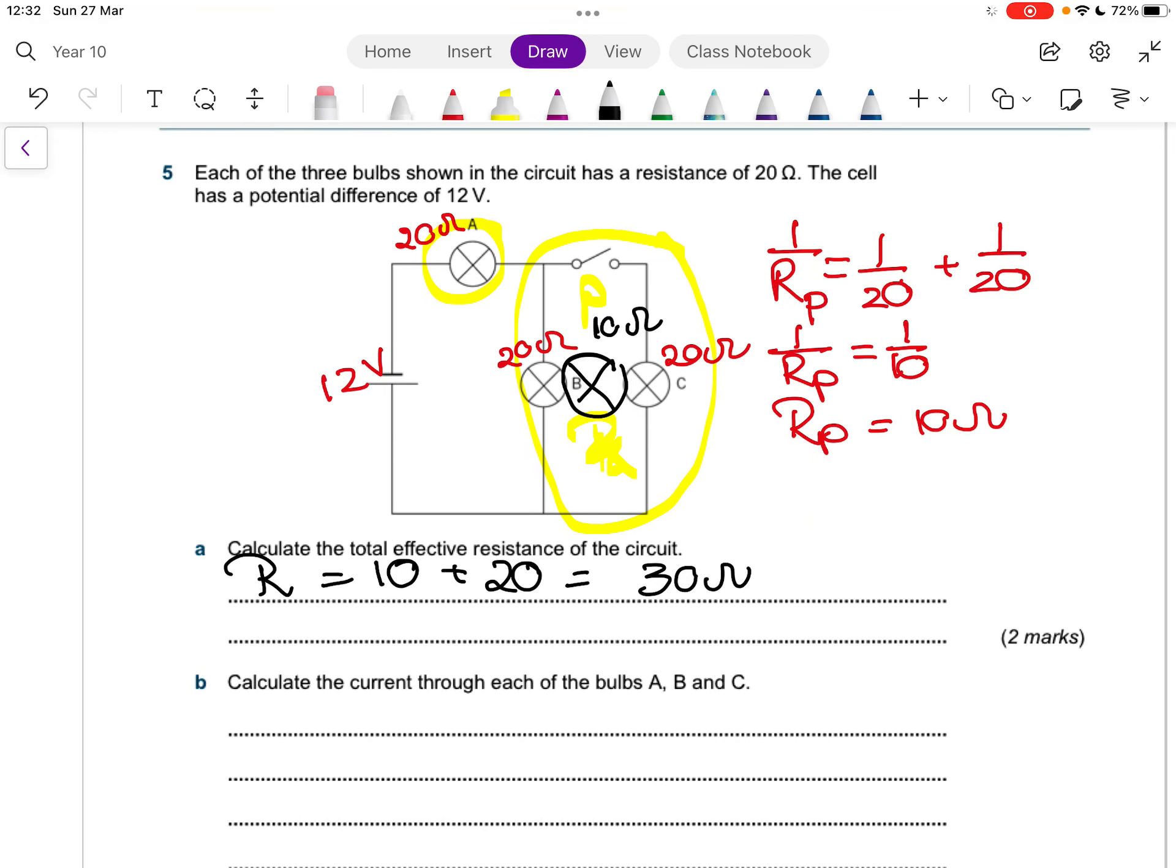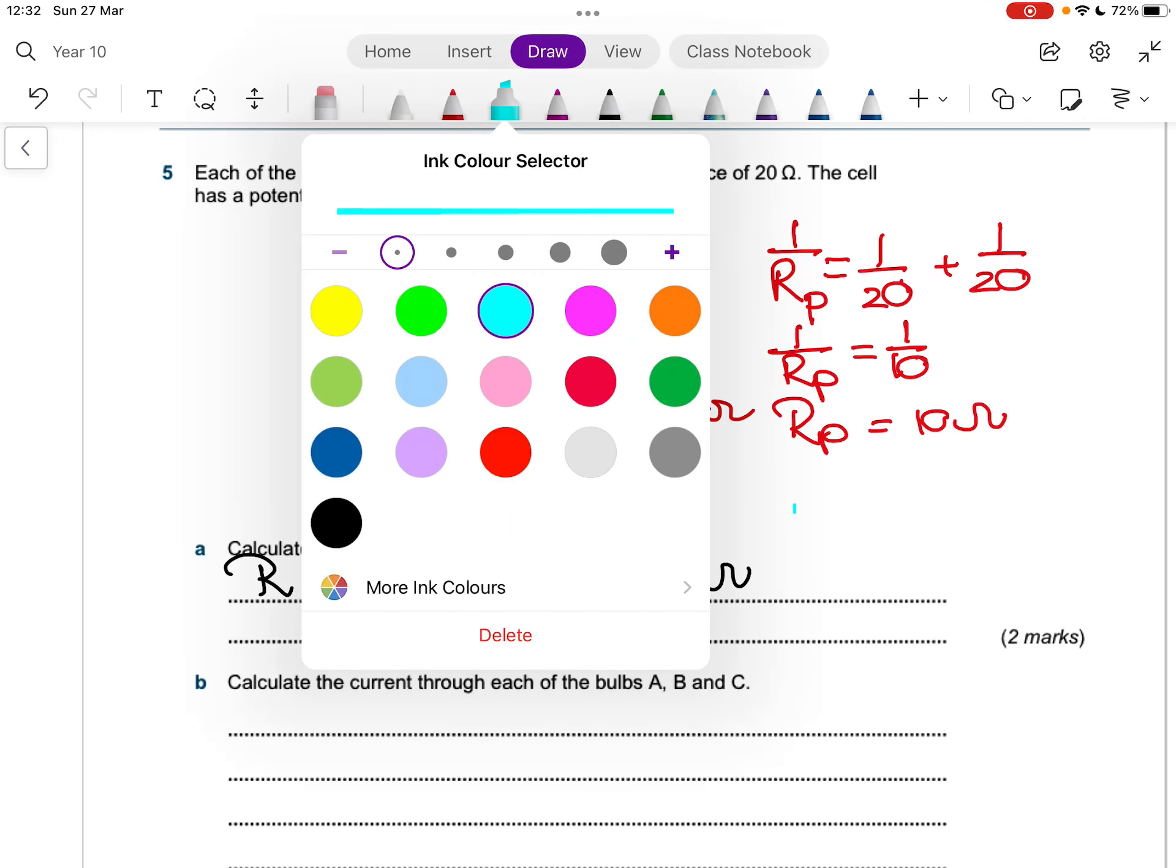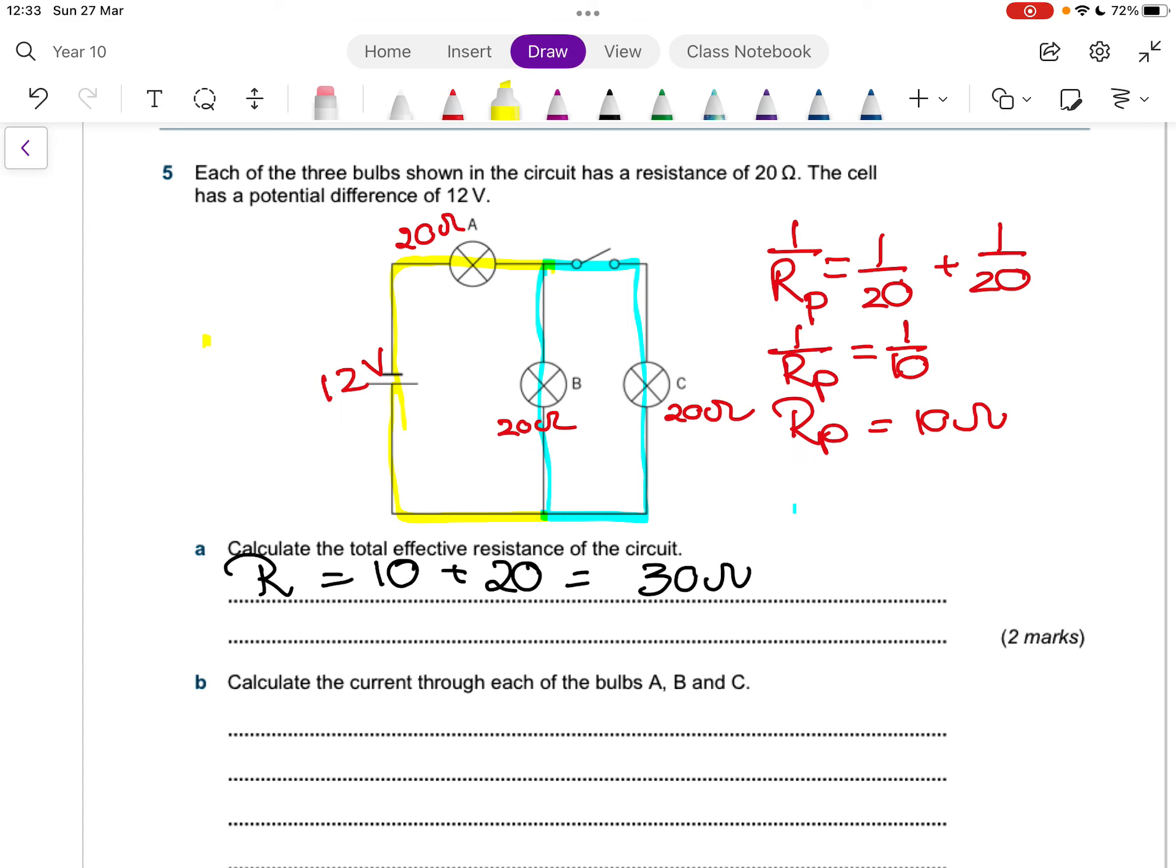Now they want to know the current through each of the light bulbs. So now what happens here is, watch here, all the current goes to here and now there's a choice. So some of it's going to go through that one, and some of it's going to go through that one. I'm using the same color there because they're both 20 ohms, so the current's going to split evenly. It's got equal choices, it's just as difficult to go through either. Then it's all going to come back together and go through there. So that means the 20 ohm resistor gets all of the current, the total current, and each of these get half.